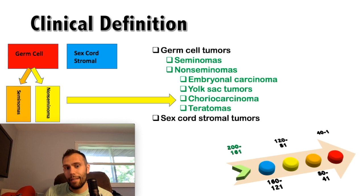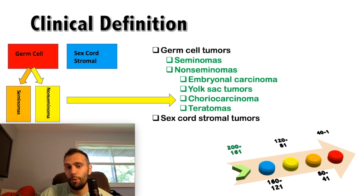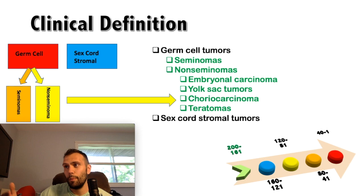Seminomas resemble more of the primordial germ cells and early gonadocytes, whereas non-seminomatous tumors can be undifferentiated, appearing as embryonic stem cells like in embryonal carcinoma, or they can differentiate into specific tissue types like the syncytiotrophoblastic or cytotrophoblastic cells seen in choriocarcinoma. You can use AFP and HCG to try to distinguish seminoma from non-seminoma, but there are many exceptions. In general, about one third of seminoma cases have HCG elevations with a normal AFP.